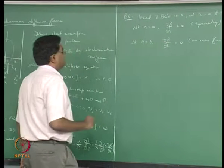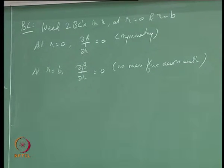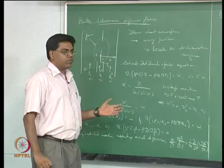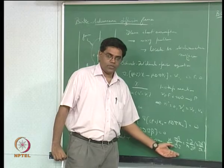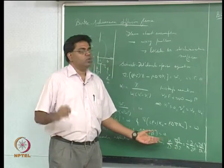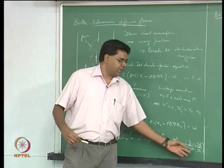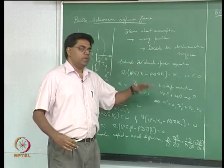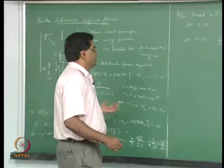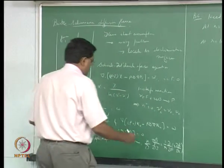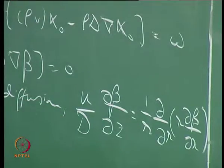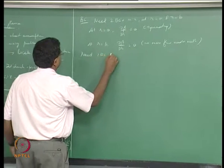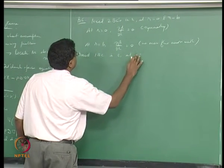With both R boundaries having Neumann conditions, we must supply a Dirichlet condition at Z=0. When axial diffusion is retained, the equation becomes second order in Z, admitting two boundary conditions — but you cannot have Neumann conditions everywhere, as that would give a non-unique solution. At this stage, we can only provide Dirichlet boundary conditions at Z=0.